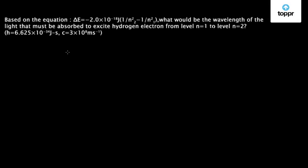Hello everyone. Today we are given this particular question of atomic structure. Based on the equation of delta E, what would be the wavelength of the light that must be absorbed to excite an electron from level n=1 to level n=2?